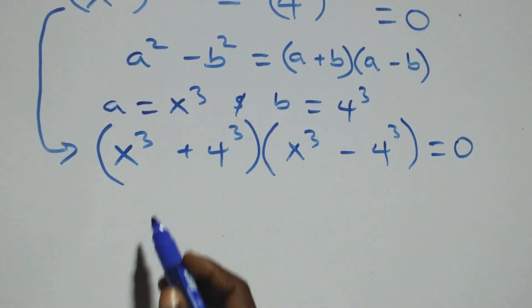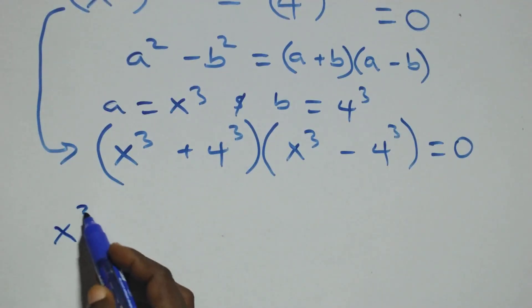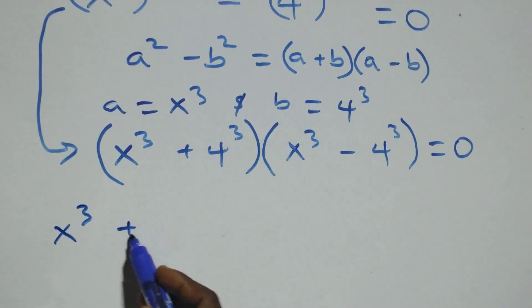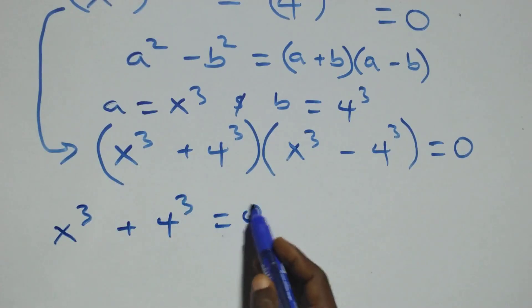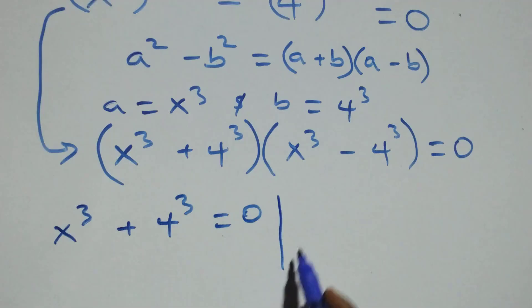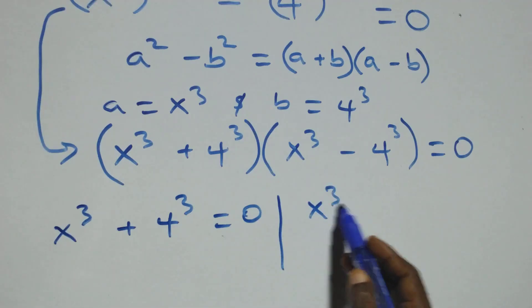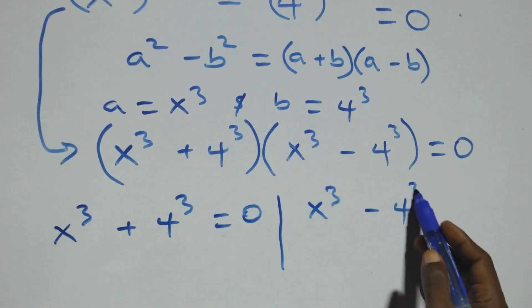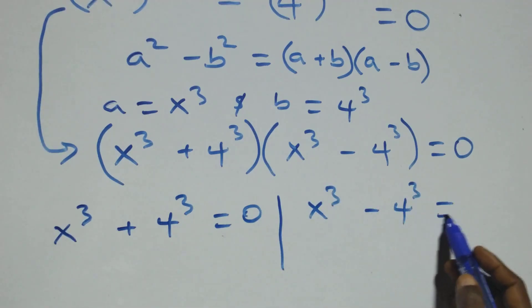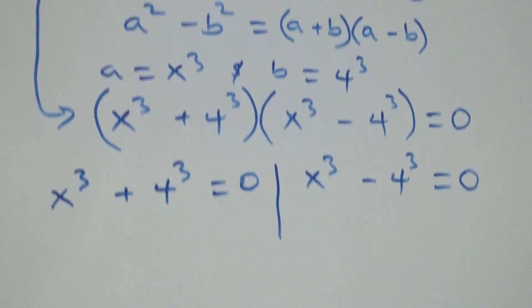Then we have two possible cases: the first is x raised to power 3 plus 4 raised to power 3 equals to 0, and the second is x raised to power 3 minus 4 raised to power 3 equals to 0.